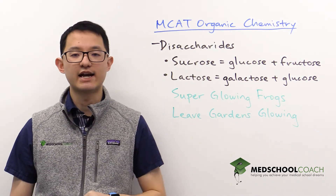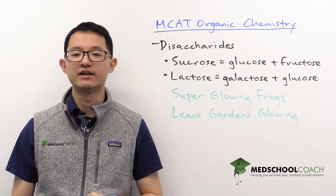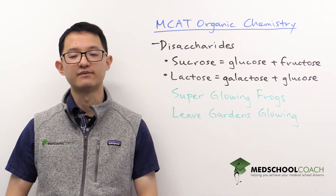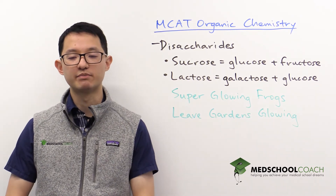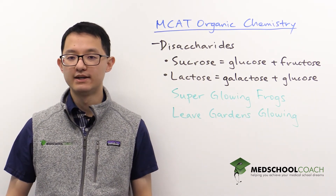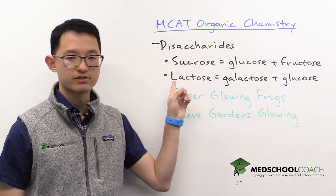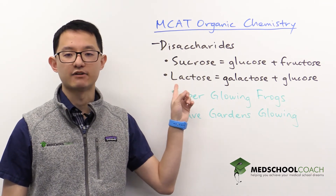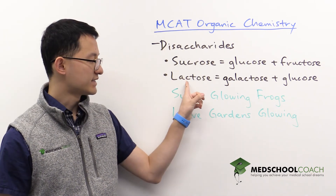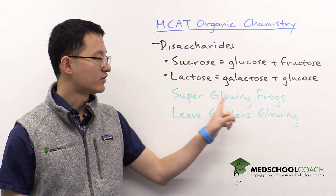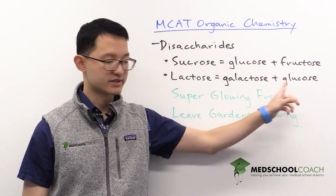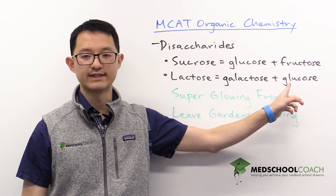Lactose is a disaccharide found in many milk products. You might have heard of some individuals becoming lactose intolerant as they grew up — lactose is the disaccharide involved with this intolerance. It's made from galactose and glucose, two monosaccharides linked together.